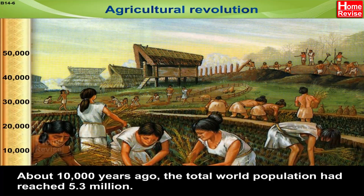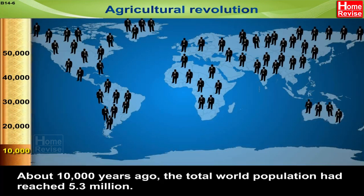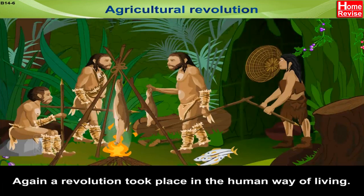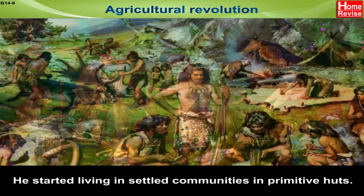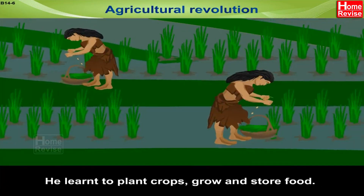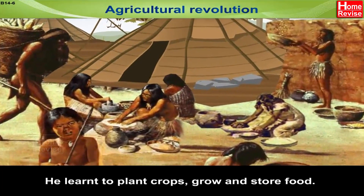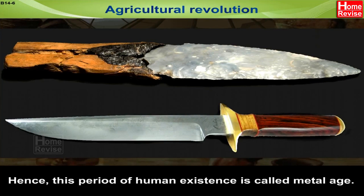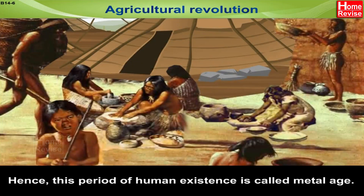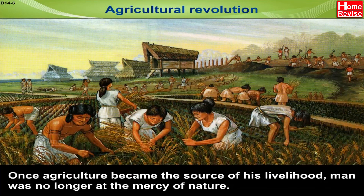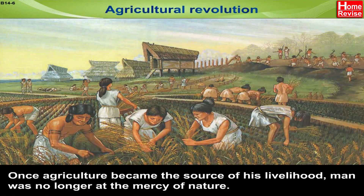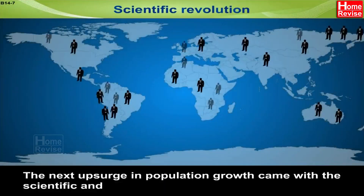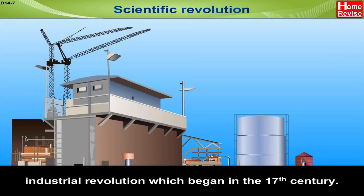Agricultural revolution. About 10,000 years ago the total world population had reached 5.3 million. A revolution took place in the human way of living: man started living in settled communities, learned to plant and store crops. Gradually stone tools were replaced by those of metal — copper and bronze — and hence this period is called the Metal Age. Once agriculture became the source of his livelihood, man was no longer at the mercy of nature, leading to rapid growth in human population.